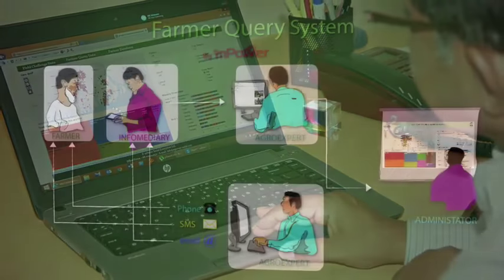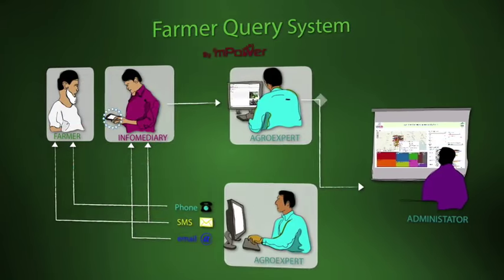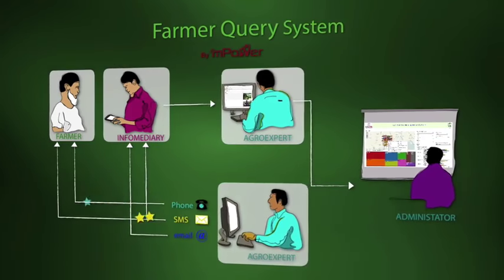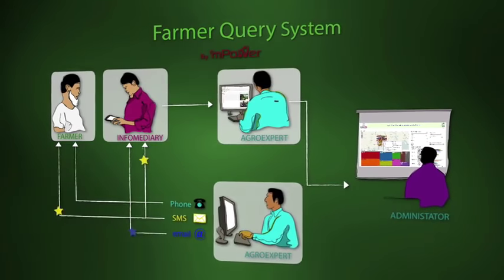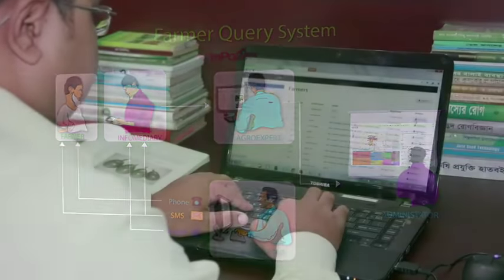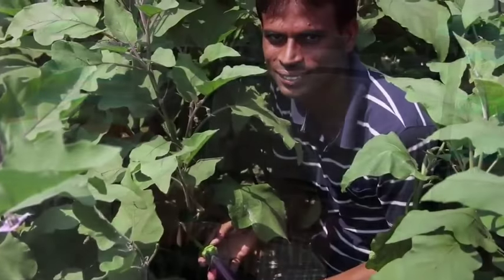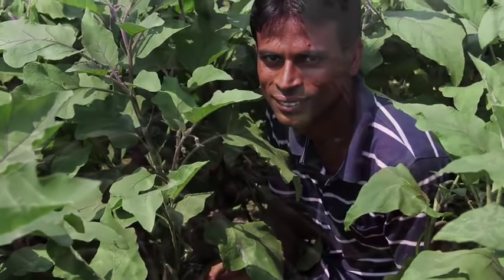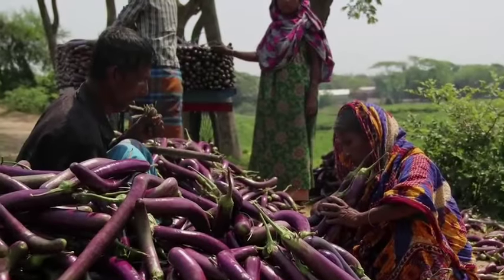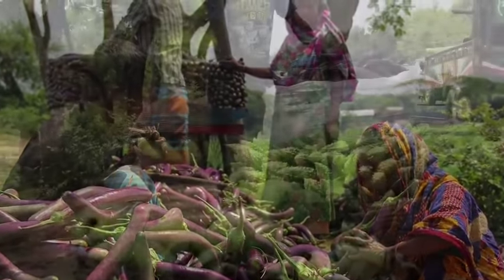We have just seen how the Farmer Query System establishes a quick and on-demand communication channel with experts for reliable agro-advisory services. Ensuring authenticated information to farmers can lead to better yields and hence prosperity for the farmer, their families, and their communities.